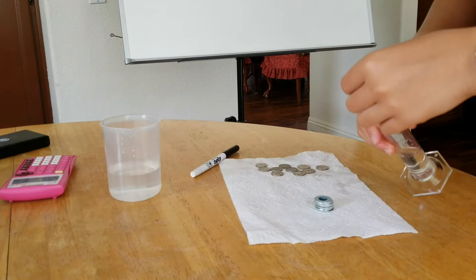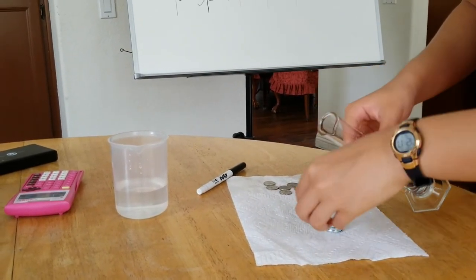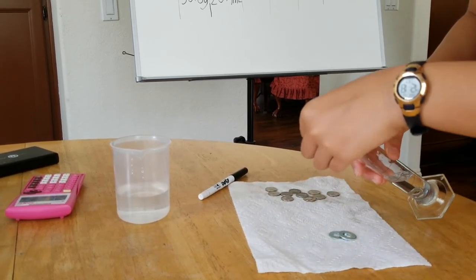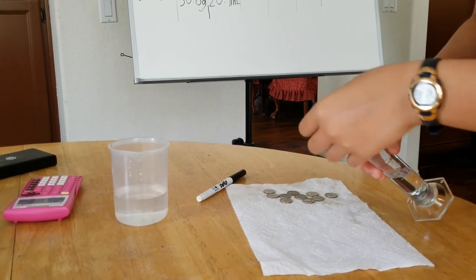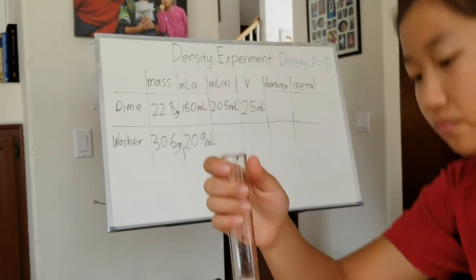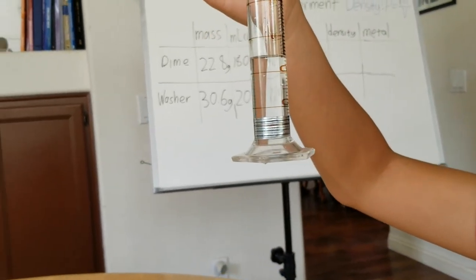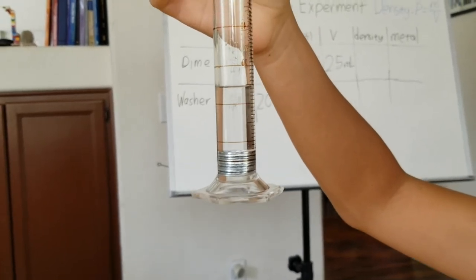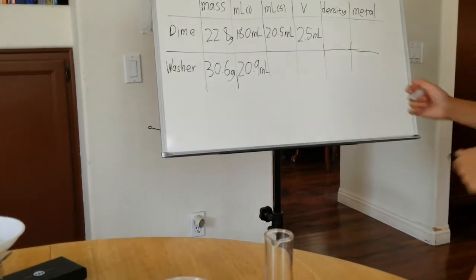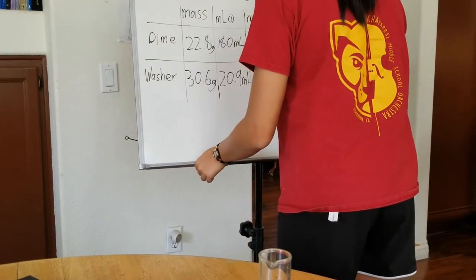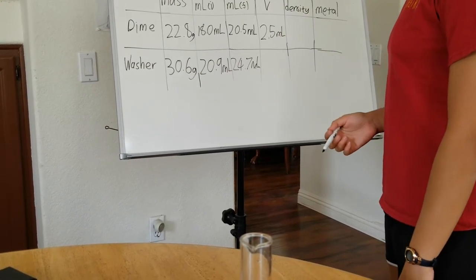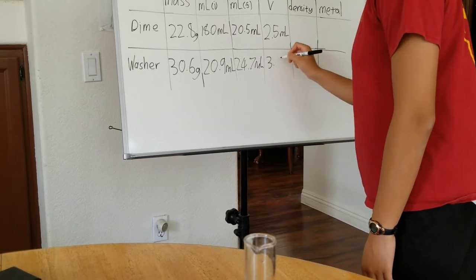And once again, just slide these in one by one so you don't make a big splash. Swirl it around, get the air bubbles out. And then now, lift it up again, bring it to eye level. That is at 24.7. So 24.7 milliliters. Now from here you can find the volume, 24.7 minus 20.9, which is 3.8.